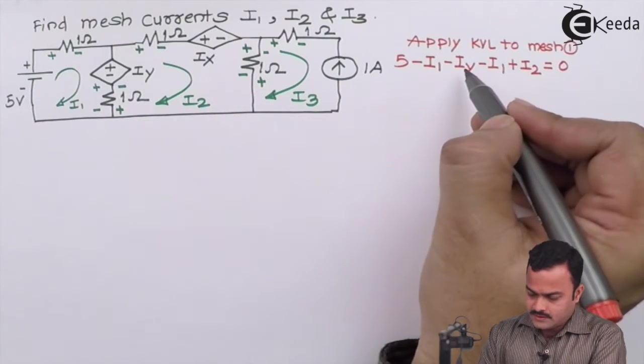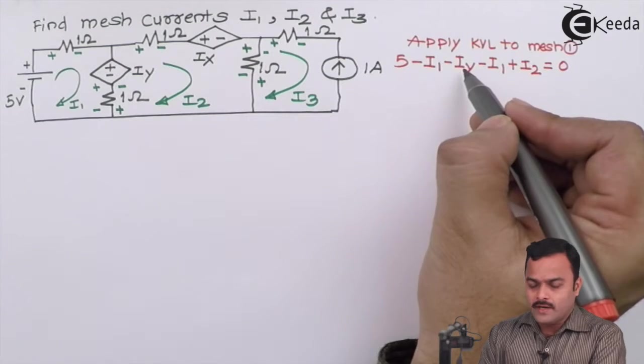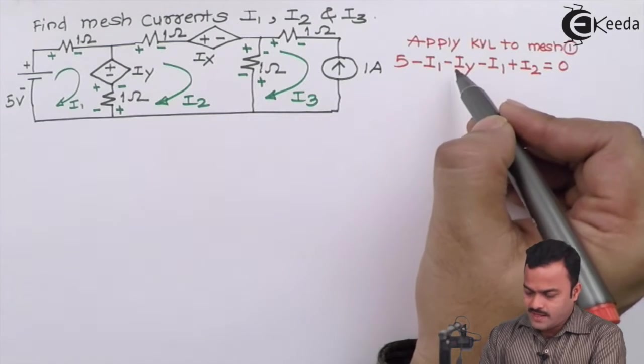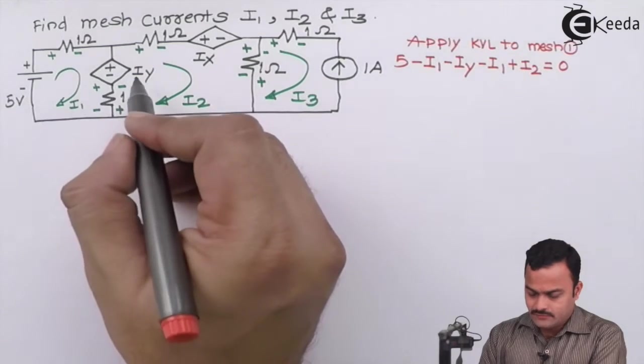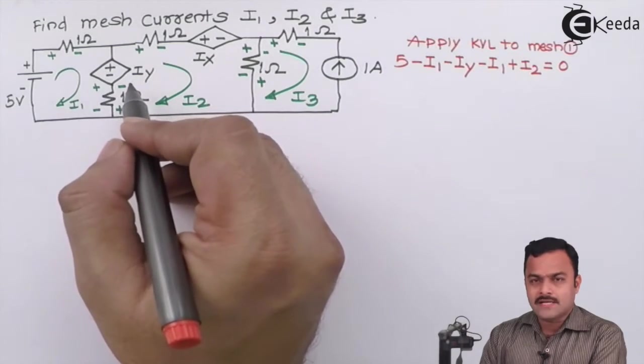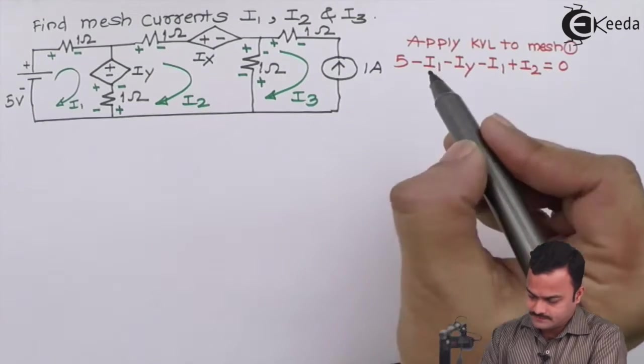Over here, iy is a variable which we have not marked directly, so we need a replacement for it. We will form a substitution equation for iy based on the circuit.